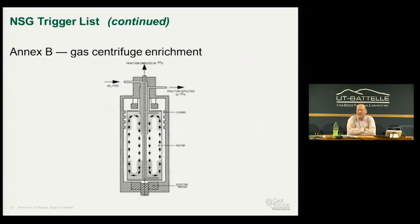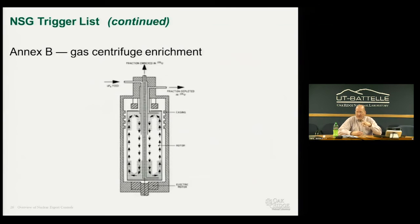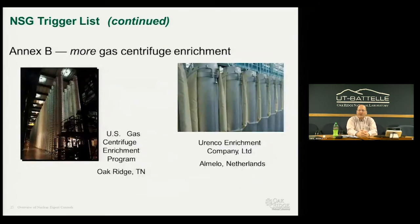Gas centrifuge is currently the technology predominantly used in enrichment programs for both peaceful uses and weapons. It exploits the roughly 1% difference in atomic mass between uranium-238 and uranium-235, separating them as a gas into an enriched stream and a depleted stream. It takes many many stages to reach reactor grade and many more to reach weapons grade. A photograph from the now-dormant U.S. gas centrifuge enrichment program at Oak Ridge shows the scale of this technology.